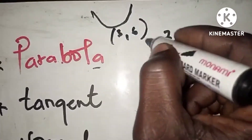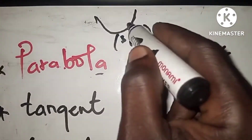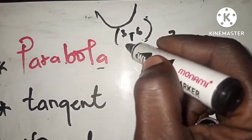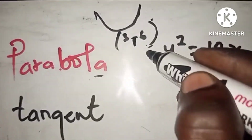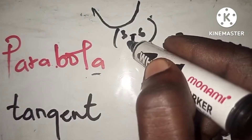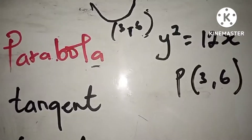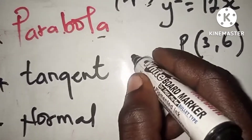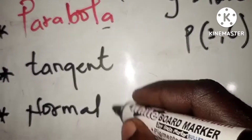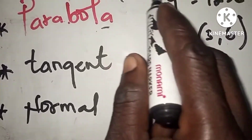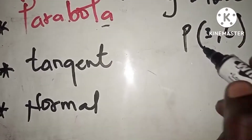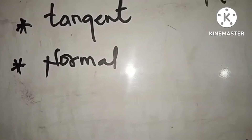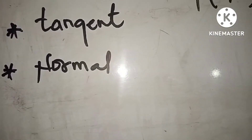That point three comma six is like a junction or waypoint — the parabola passes through it on its way. We have been asked to find the equations of the tangent as well as the normal from this information. Let's see how to go about it.